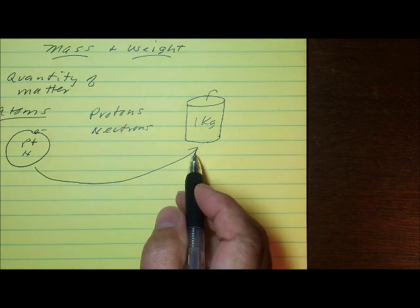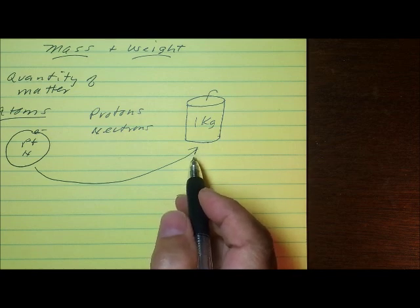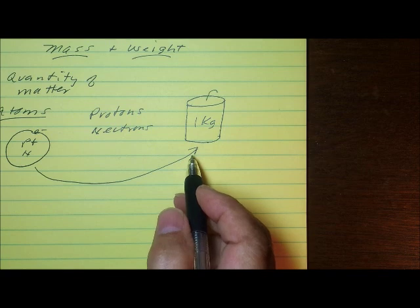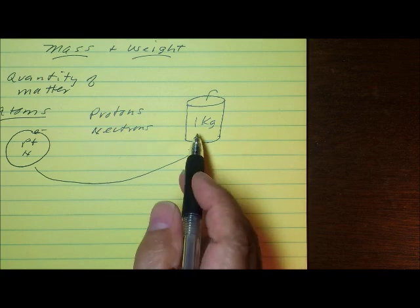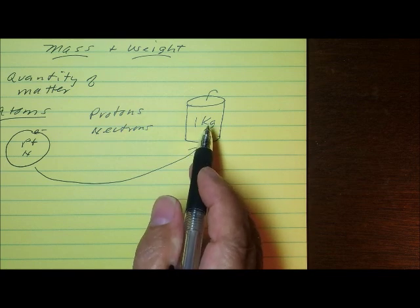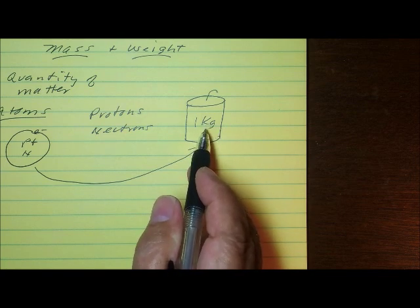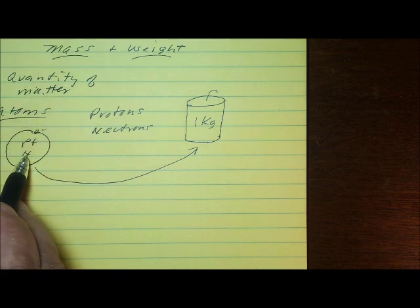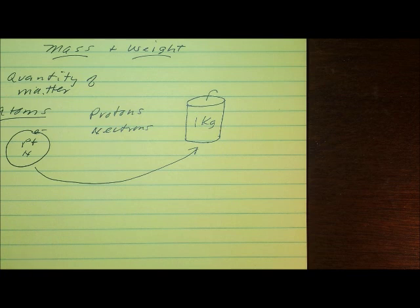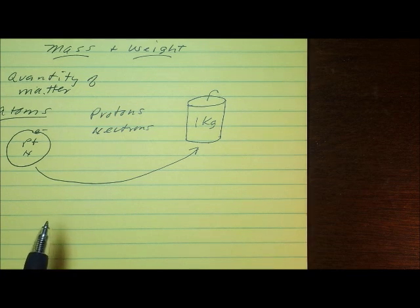The more protons and neutrons, the greater its mass. So when you put an object on a balance and you weigh its mass, you find its mass, you're finding out something about the number of protons and neutrons that are in that object. You're measuring the quantity of matter, the quantity of protons and neutrons. The bigger the mass, the more protons and neutrons it contains.